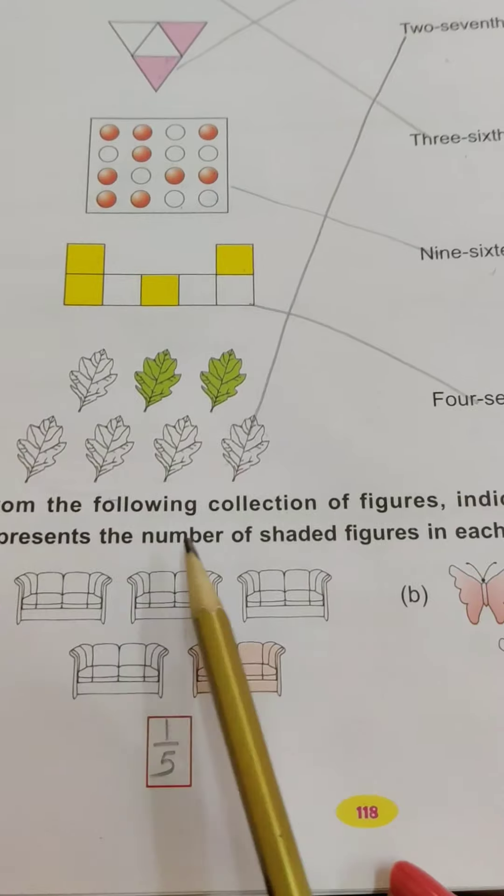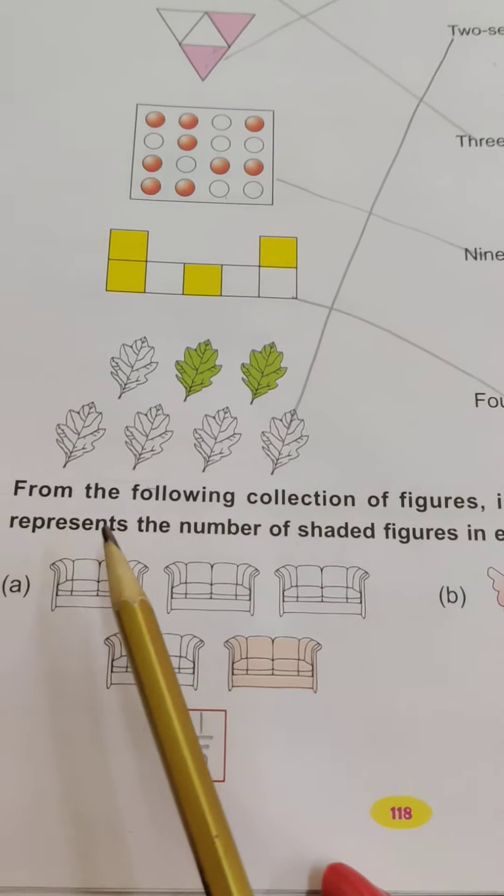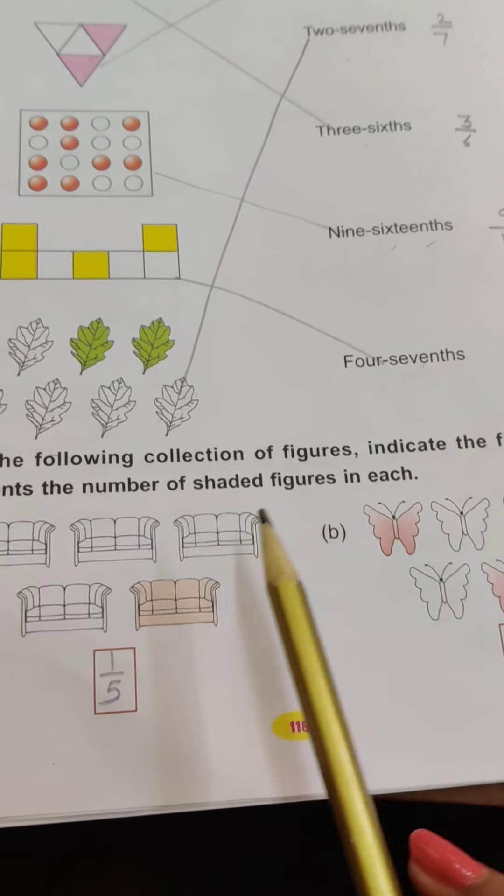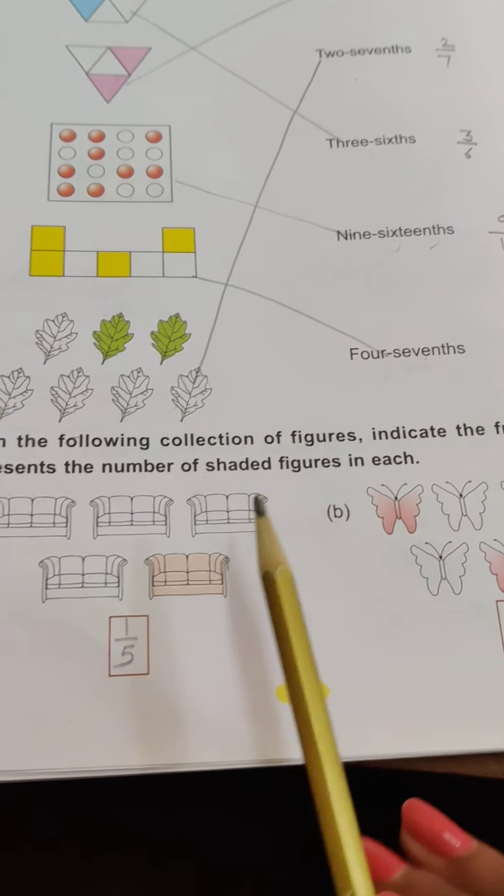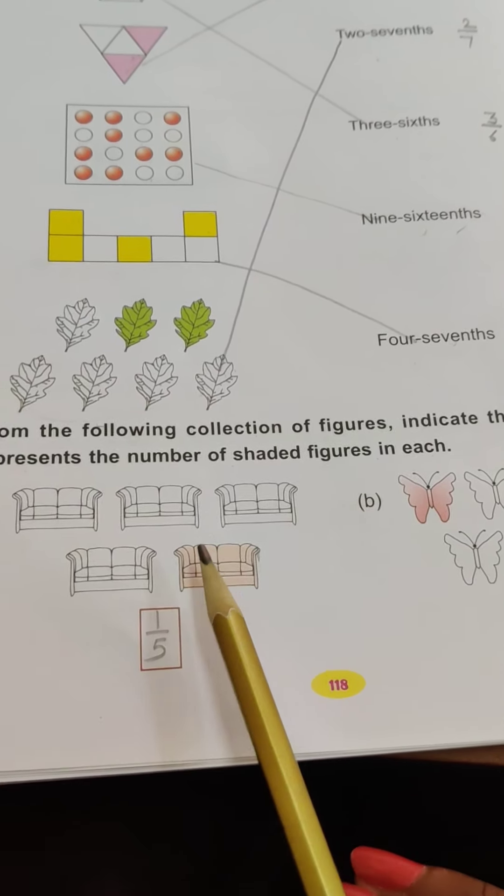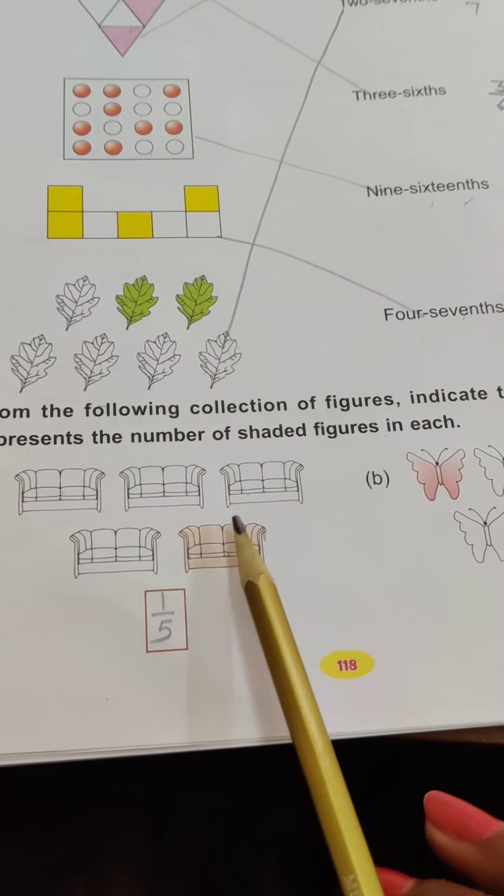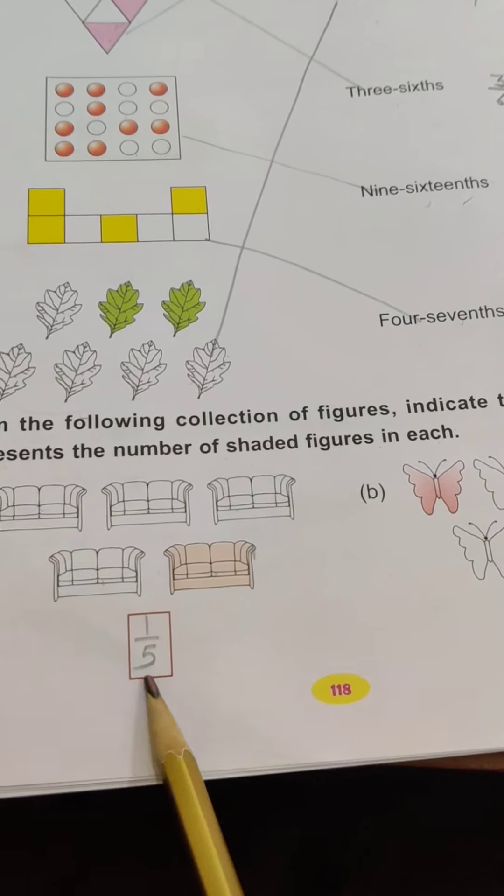Next, see, from the following collection of figures, indicate the fraction which represents the number of shaded figures in each. We have some collections here which we have to represent as a fraction of shaded figures. So you can see how many shaded is 1, and if you count in total, which is 5, means 1 out of 5 means 1 by 5.